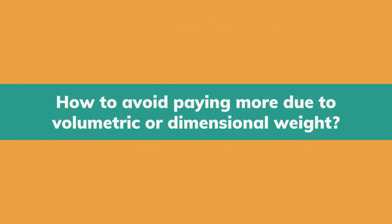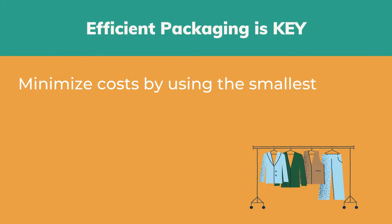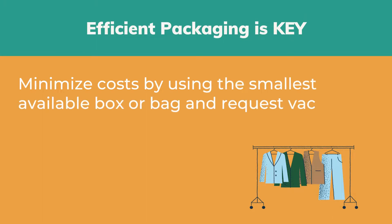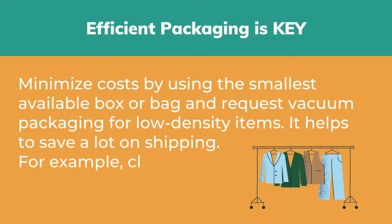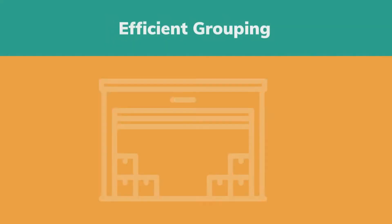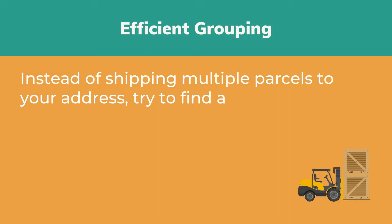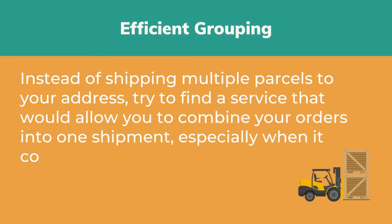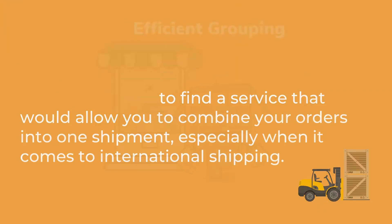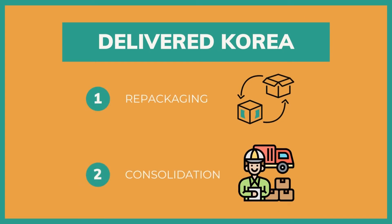How to avoid paying more due to volumetric or dimensional weight? Efficient packaging is key. Minimize costs by using the smallest available box or bag, and request vacuum packaging for low-density items — it helps to save a lot on shipping, for example, clothes. Efficient grouping is also important. Instead of shipping multiple parcels to your address, try to find a service that would allow you to combine your orders into one shipment, especially when it comes to international shipping.